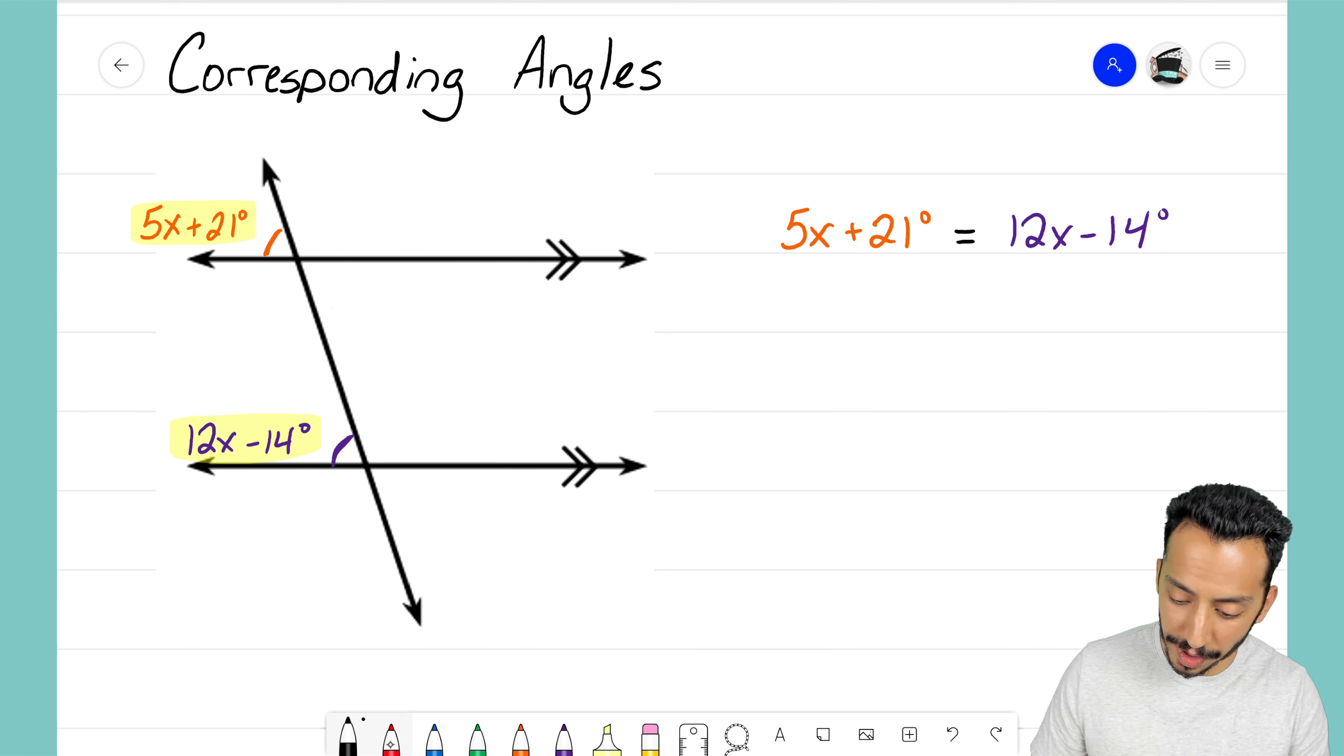Let's go ahead and do that. I want to isolate my x variable. To do that, I'm going to add 14 degrees to both sides. I'm going to try and move all my x's to one side, all my constants to the other.